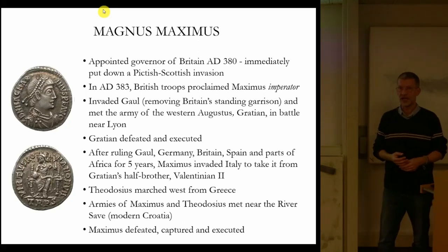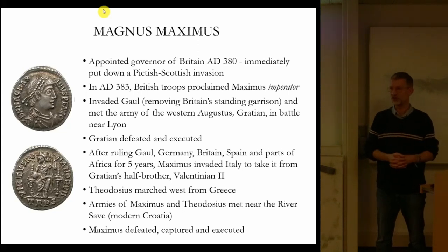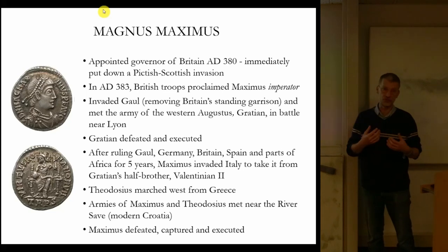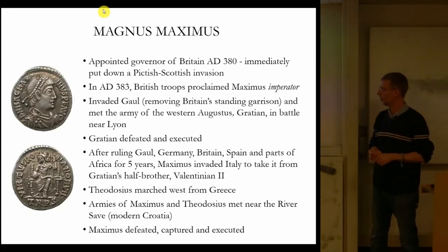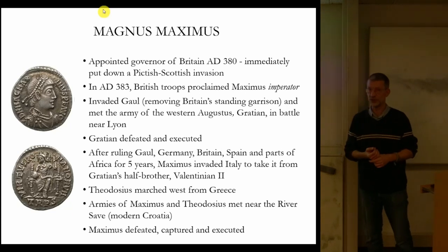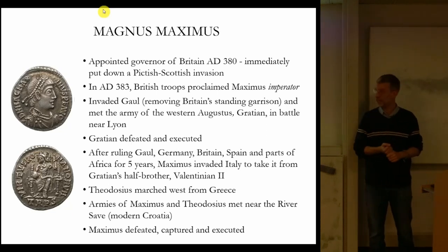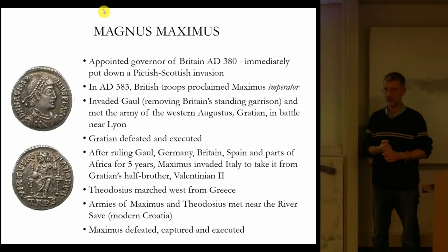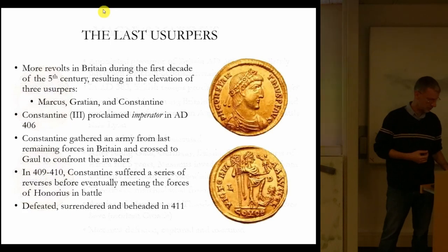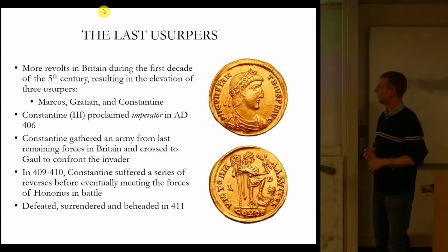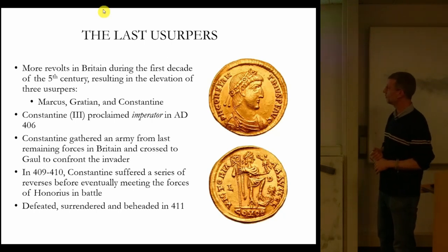A bit of politics to start with. Magnus Maximus, as I alluded to on my first slide — the beginning of the end of Roman Britain began, you could argue, maybe at the beginning of the fourth century, but certainly by the reign of the usurper Magnus Maximus in the 380s. He was a usurper who took many of the troops from Britain across onto the continent in order to support his claims to the Imperial purple. As a potted history of what happened between 383 and 388: he was defeated, captured, and executed.